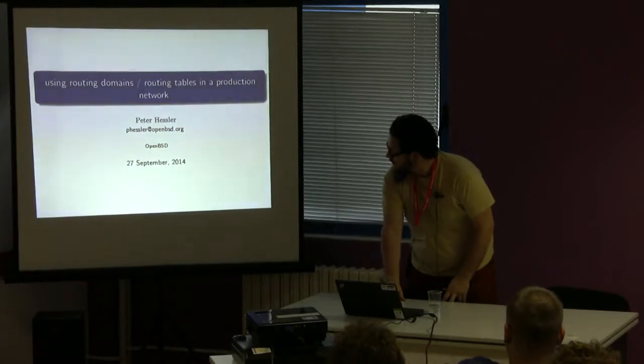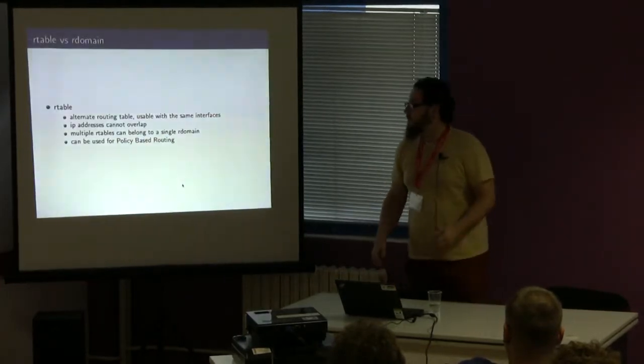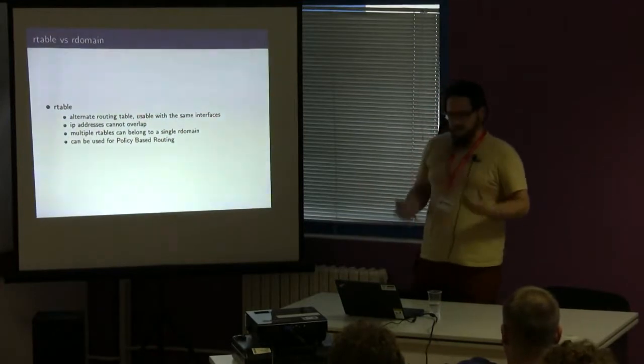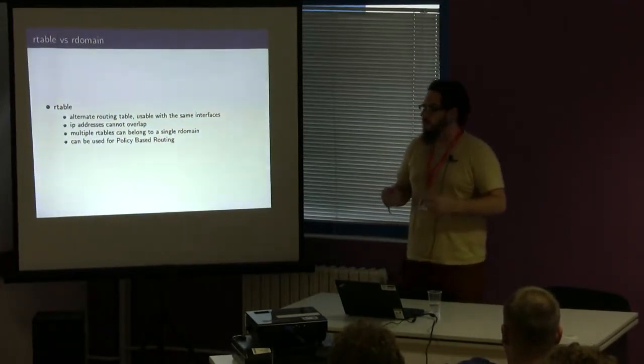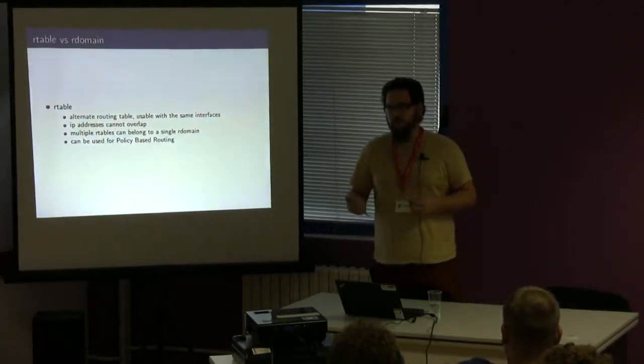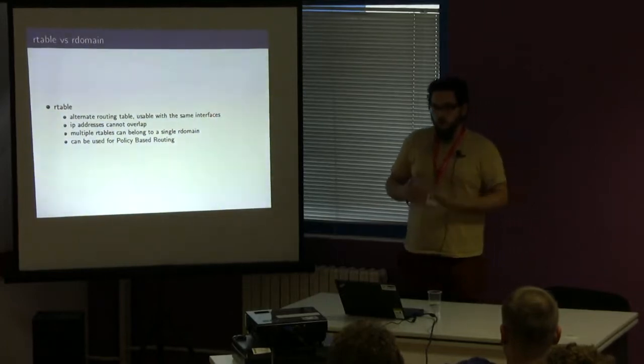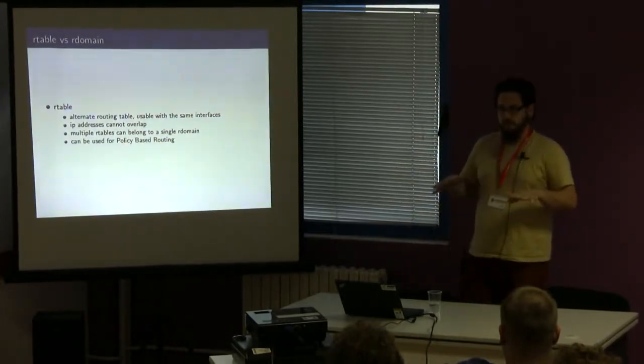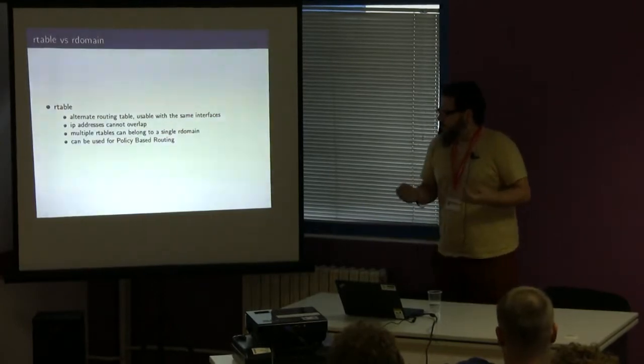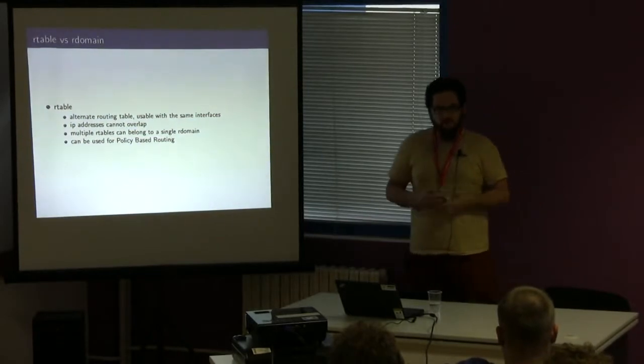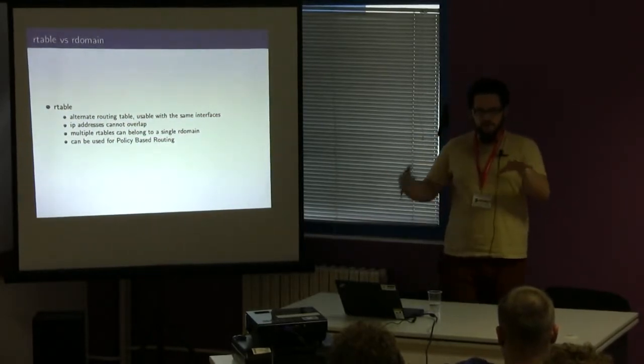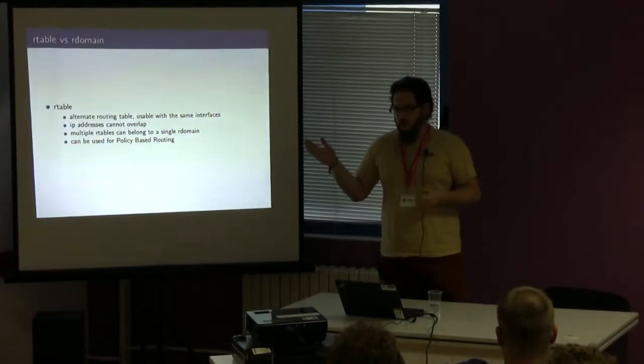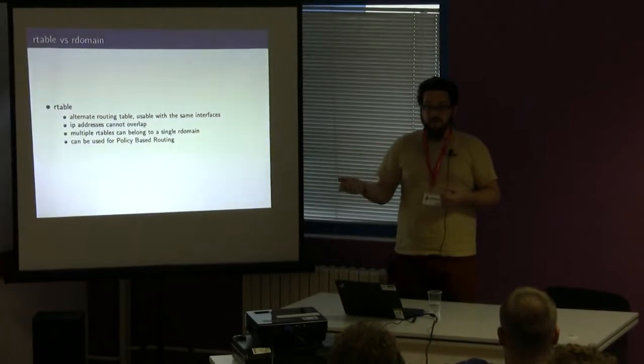So we'll just start off. There's always a question of what is an R table and what is an R domain. Routing table was the first thing that we added. This was support for an alternate routing table that would be used. This could be just simply an overlay on top of what was already in the system. You could not have conflicting IP addresses in this. It was only for routes to different places over different links.